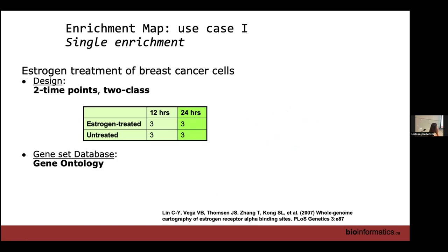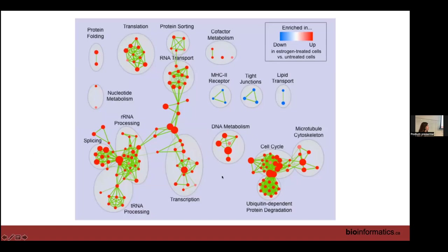Here are some quick examples of how to use Enrichment Map. A basic example is a single enrichment case — treatment versus control — in this case cells treated with estrogen versus not treated, after 12 hours and 24 hours. We ran a basic enrichment analysis to generate enrichment results. Enrichment Map will not generate the polished picture by itself — it generates a more complicated picture which you then have to work through and rearrange to get a figure like this.